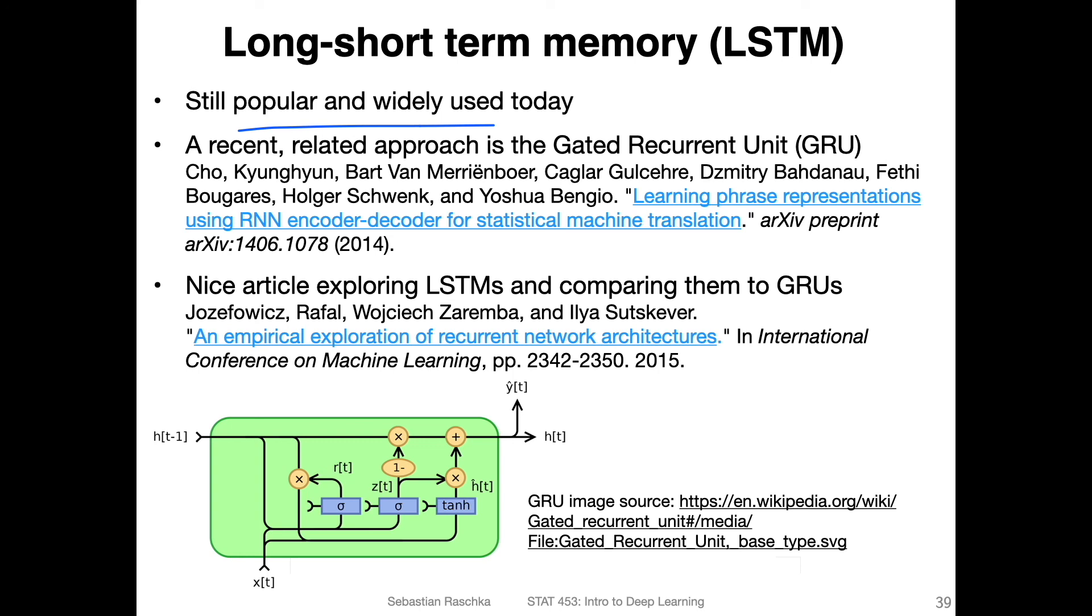There's also a version where people try to simplify it a little bit - the gated recurrent unit. It's not that recent, it's already seven years old, not that new anymore. But it's also a popular implementation of something similar that is a little bit simpler. It has fewer parameters. In practice, both may work well. Because of time reasons, we're not going to cover the gated recurrent unit.